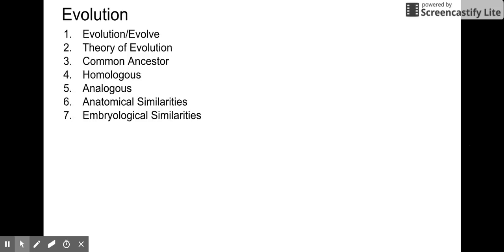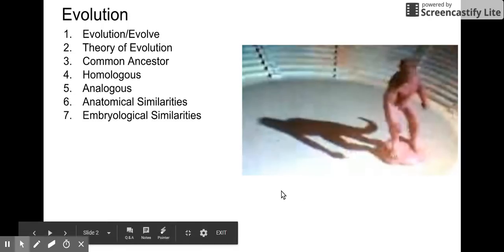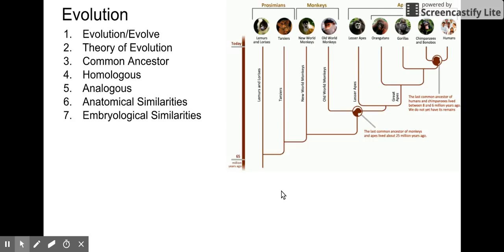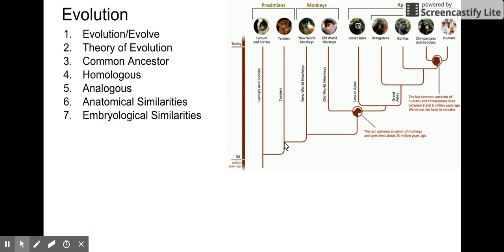Start with our first set of vocabulary here. What evolution isn't and what evolution is actually is just going to be looking at how species change through time. Here we're looking at the last 65 million years of time and species branching off and forming into new species, new groups of species perhaps, through a period of time.